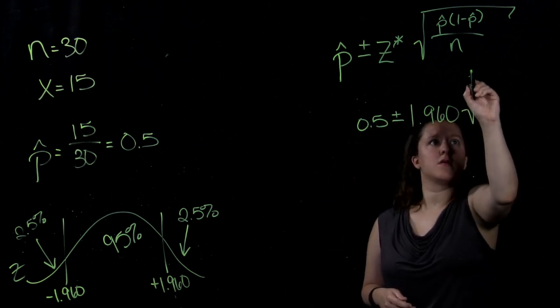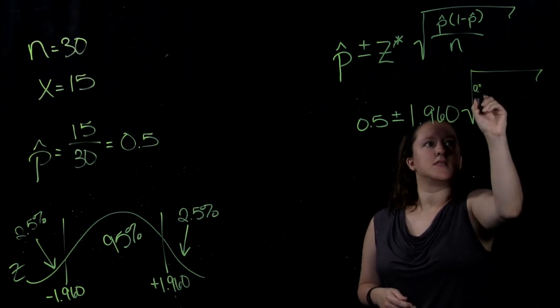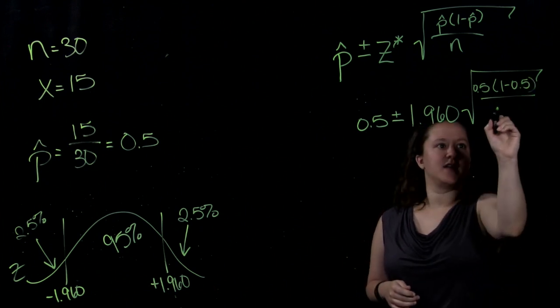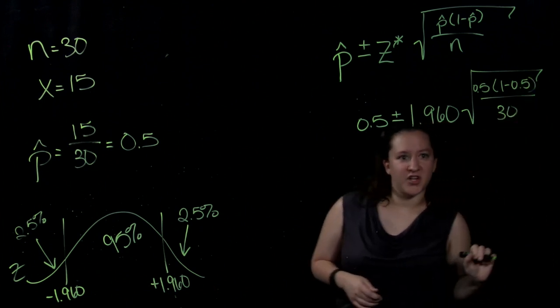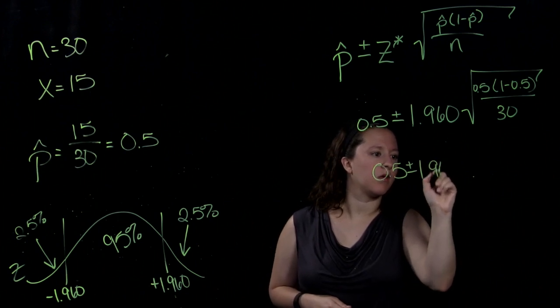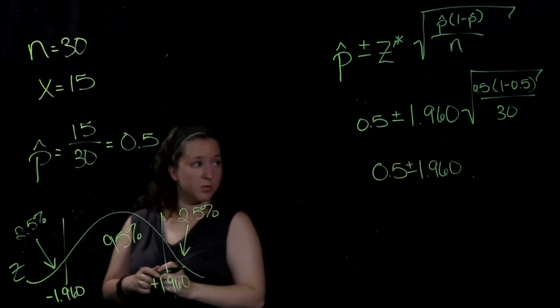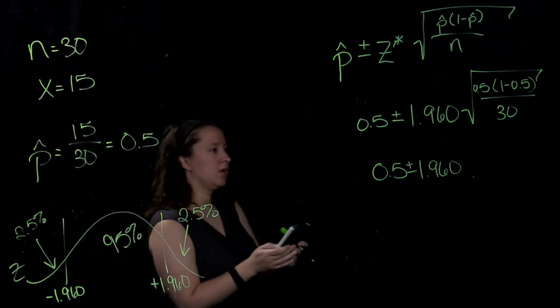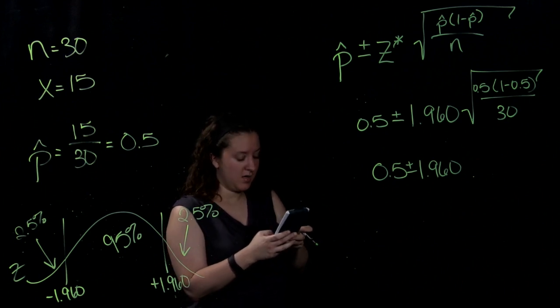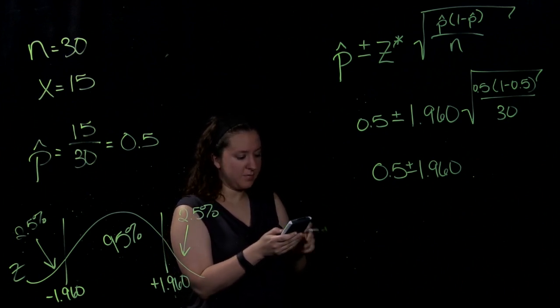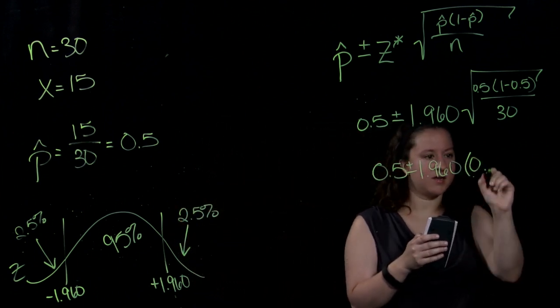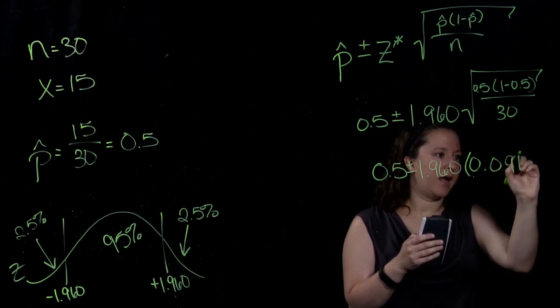Now we can compute the standard error as 0.5 times 1 minus 0.5 divided by the sample size, which was 30. And we can compute the standard error now. So 0.5 times 1 minus 0.5 is 0.25 divided by 30. The square root of that will give you a standard error of 0.091.